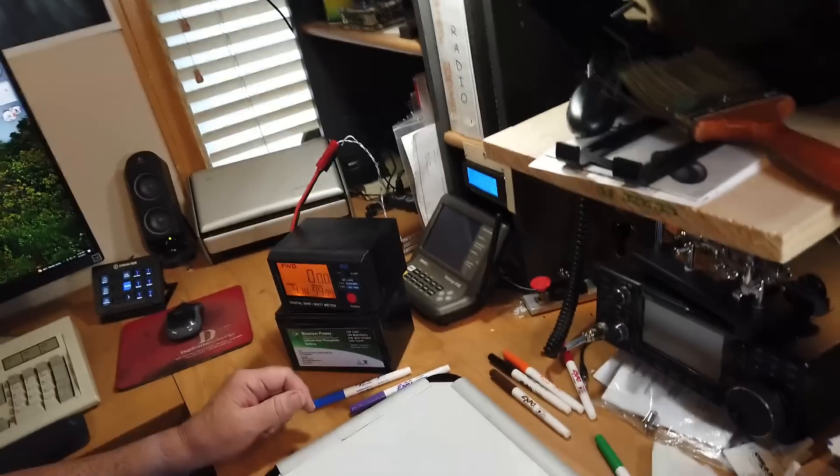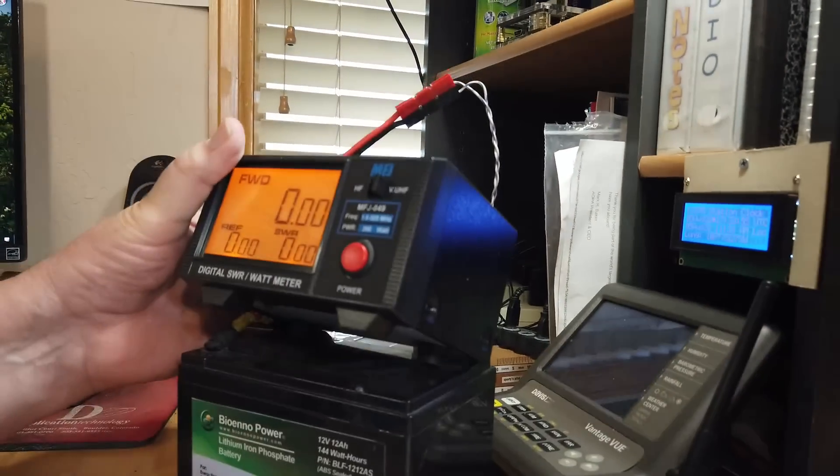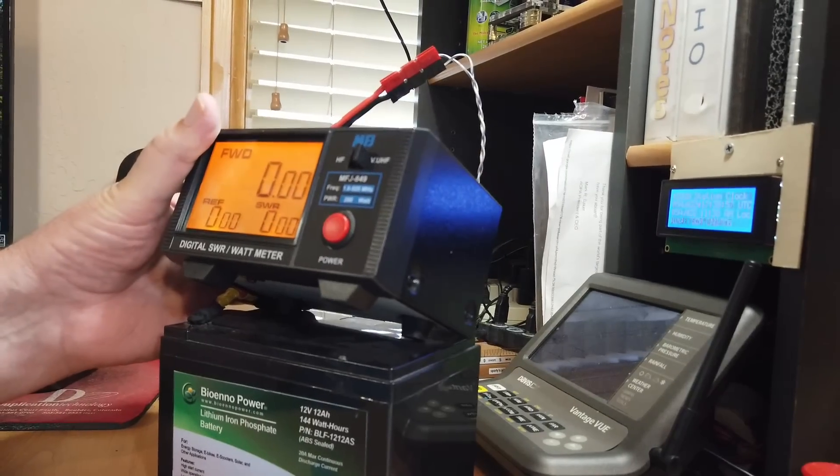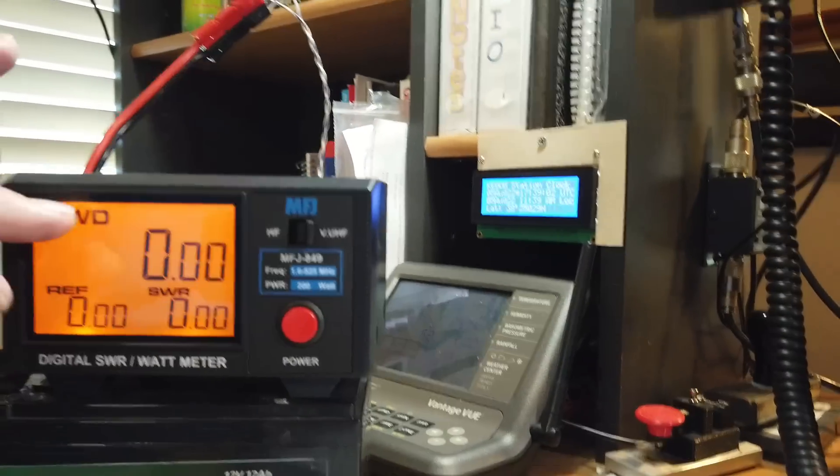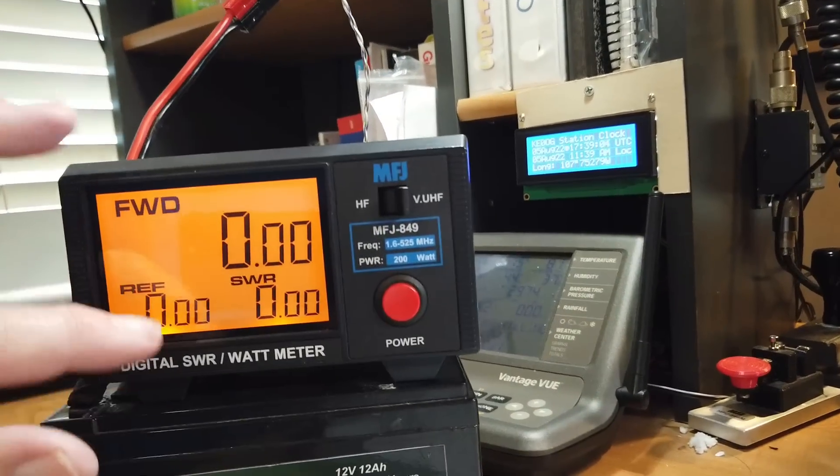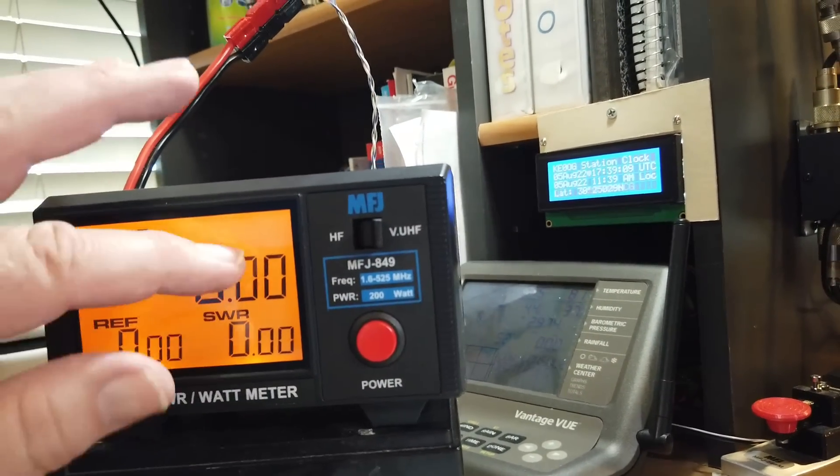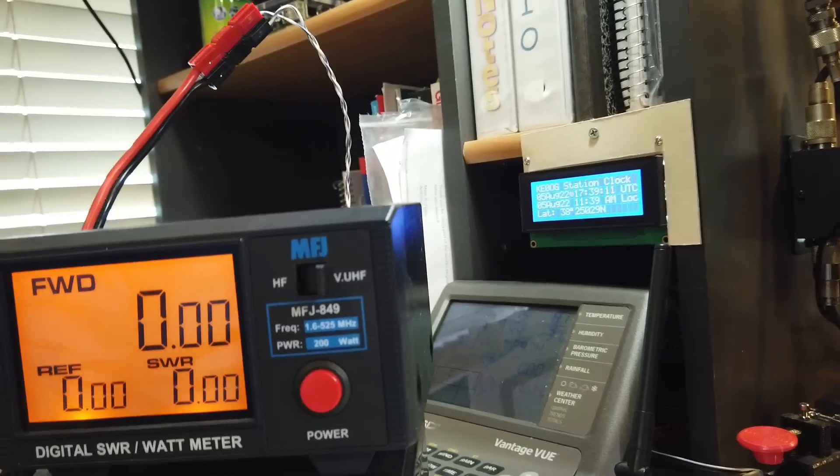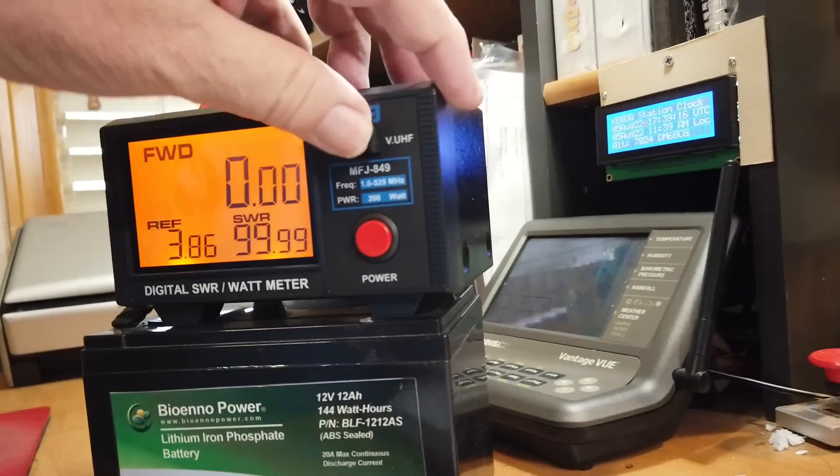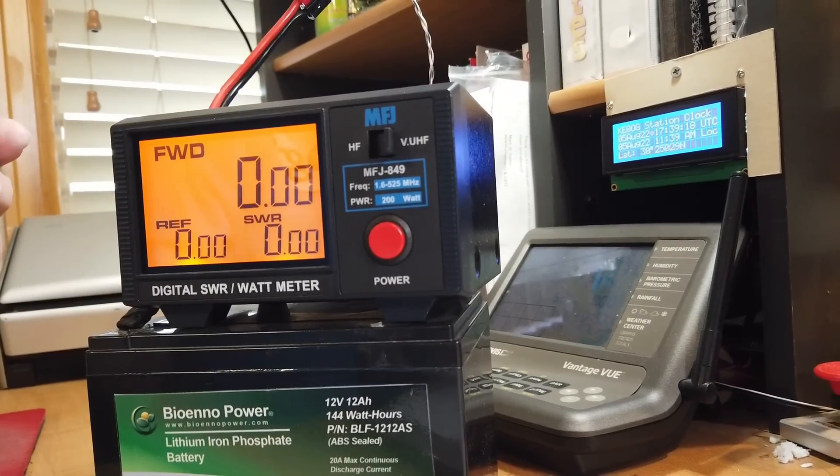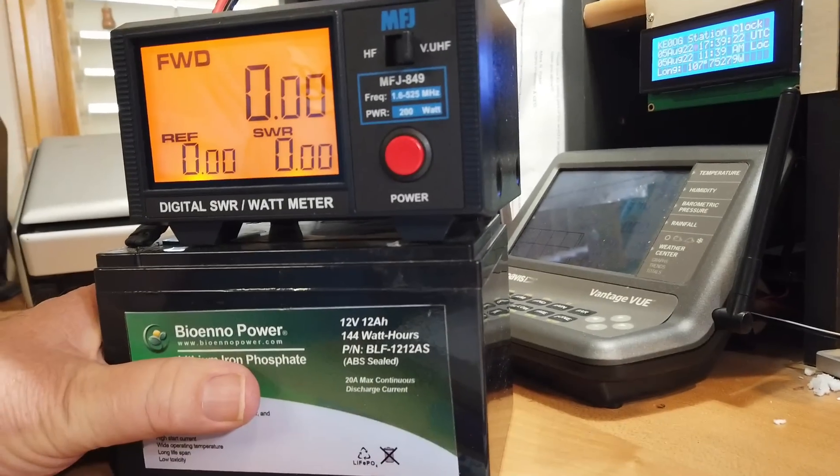Let's take a look at what he might be using. This is an MFJ849, a digital SWR and watt meter that measures the forward power, the reflected power, and gives you the computed SWR. It's got two ranges, one for HF and one for VHF. It needs 12 volts to operate, so we're just using this little battery here.